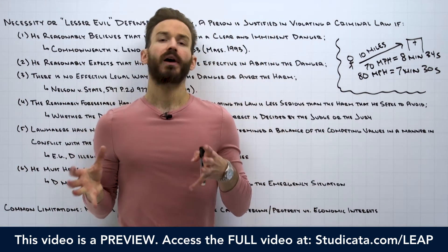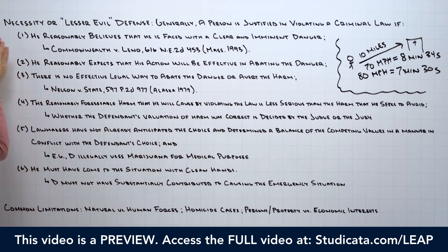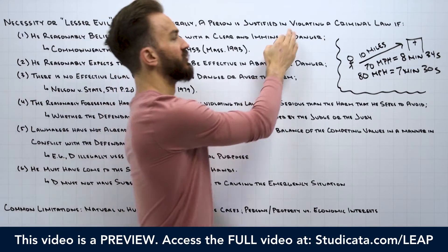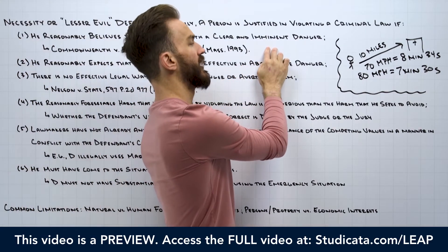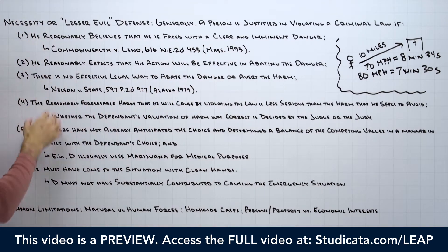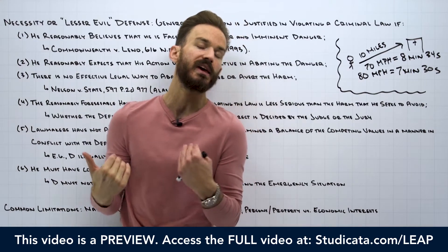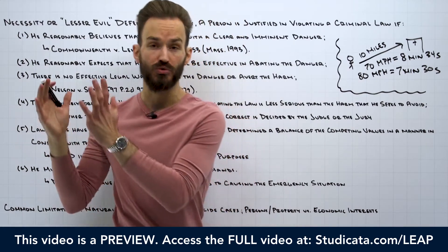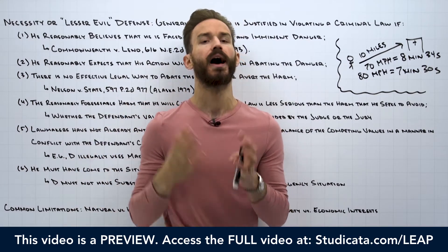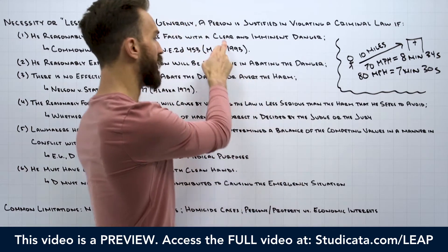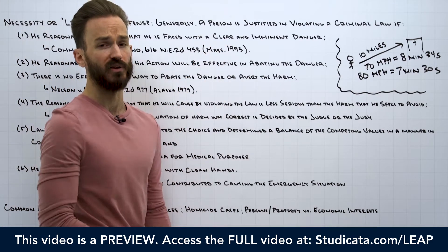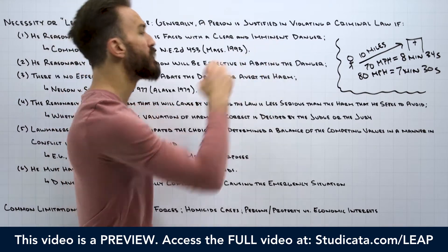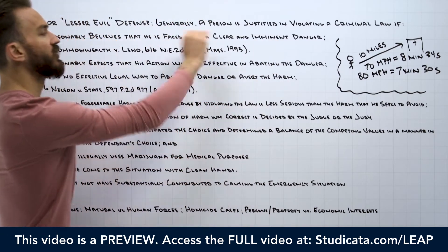At common law, generally a person is justified in violating a criminal law if: number one, he reasonably believes that he is faced with a clear and imminent danger. In the bee sting example, this would be very obviously satisfied — when I'm stung by a bee, I know I have eight minutes to live. This is the clearest definition of clear and imminent danger: I am going to die from this allergic reaction and I only have eight minutes to get treatment.